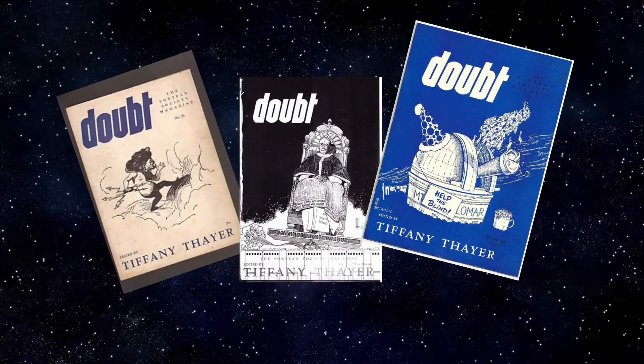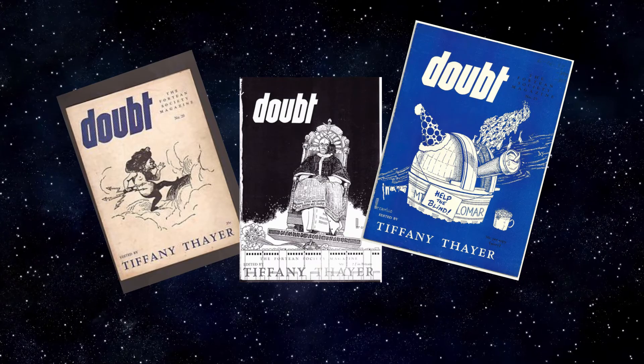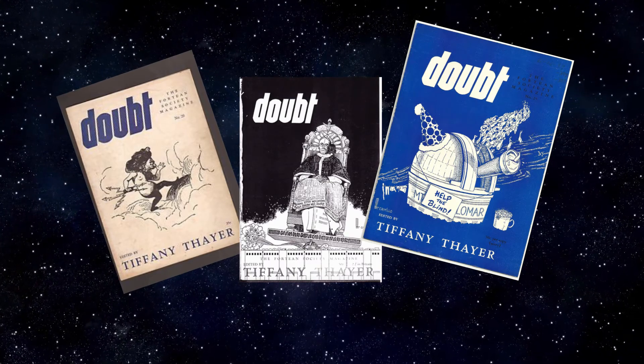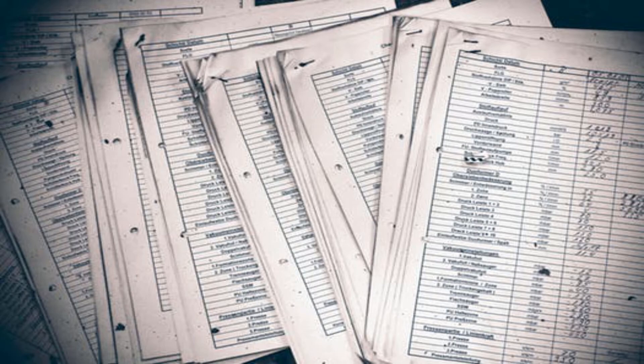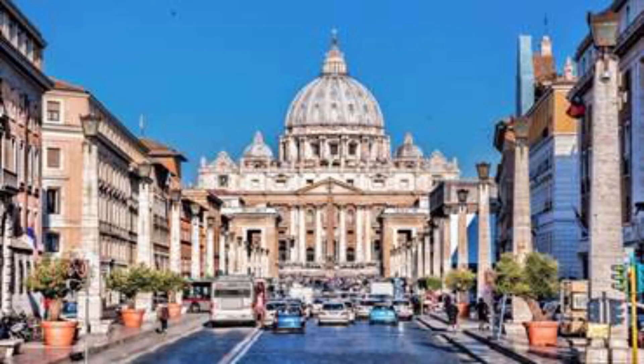In 1953, Doubt, also known as Fortean Society magazine, published an alleged transcript of an Egyptian papyrus. The transcription was sent in by Tiffany Thayer, who claimed that Boris de Rachel Wiltz sent her the transcript. Boris de Rachel Wiltz had told her that he found the original transcript amongst the papers that Alberto Tully had left. The late Professor Tully was the former director of the Egyptian Museum in the Vatican.